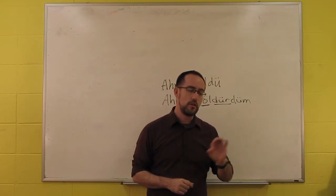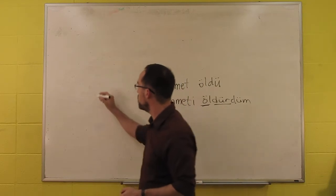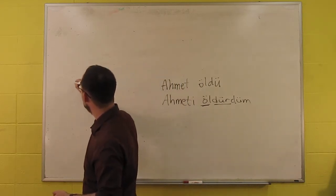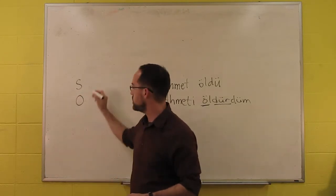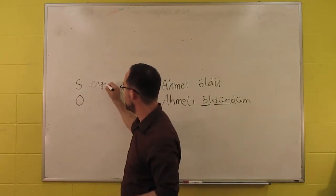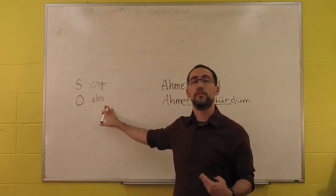But in an ergative-absolutive language it's different. So if the verb has a subject and an object, then the subject will be marked with ergative, what's called ergative, and the object will be marked with absolutive.